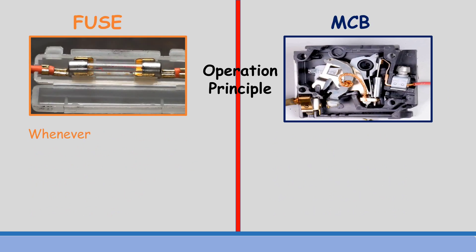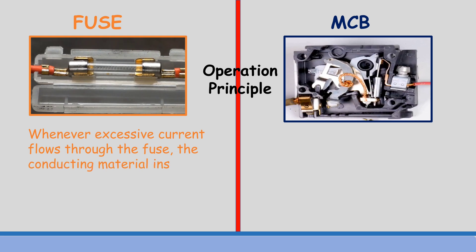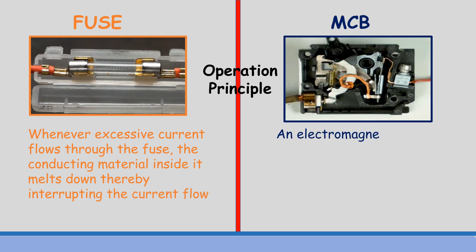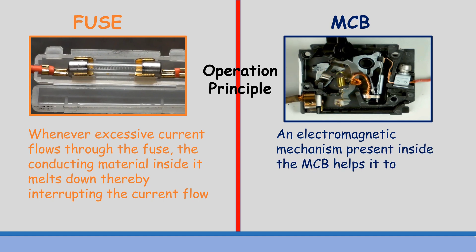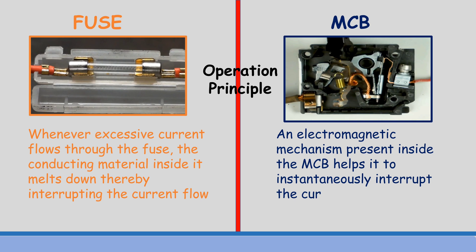Whenever excessive current flows through the fuse, the conducting material inside it melts down, thereby interrupting the current flow. An electromagnetic mechanism present inside the MCB helps it to instantaneously interrupt the current flow during faults.